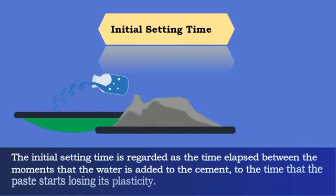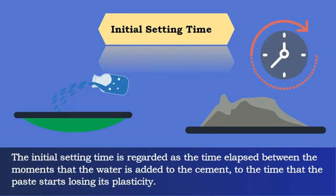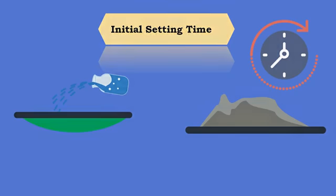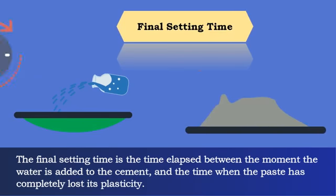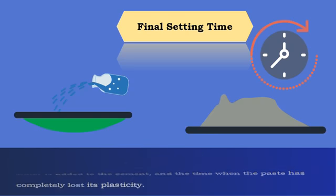The initial setting time is the time elapsed between when water is added to the cement and when the paste starts losing its plasticity. The final setting time is the time elapsed between when water is added to the cement and when the paste has completely lost its plasticity.